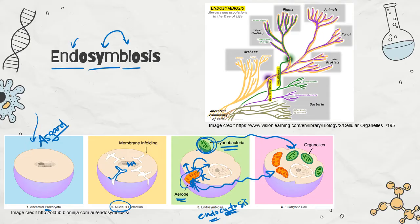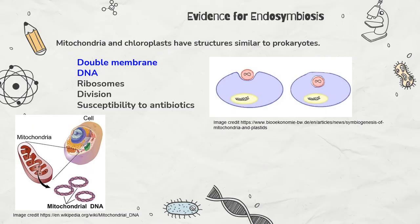How cool is that? This is just showing in the tree of life how we took some of those bacteria cells and incorporated them into other bacteria cells to make our eukaryotic cells. Amazing. But it sounds like a crazy story — how do we know this happened? There's actually lots of evidence for the endosymbiotic theory.